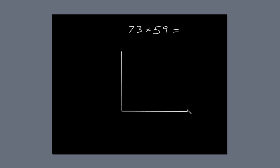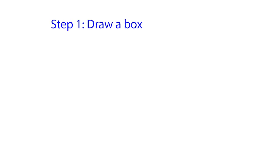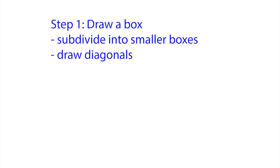The first thing you need to do is draw a box. Subdivide the box into two columns, because the first number, 73, has two digits. You also have to subdivide the box into two rows, because 59 also has two digits. You end up with a box subdivided into four smaller boxes. Next, draw a diagonal line through each of the four small boxes. You might find you can draw a diagonal through more than one of the smaller boxes at a time. That's step one. Draw a box, subdivide it into smaller boxes, and draw diagonals through them.